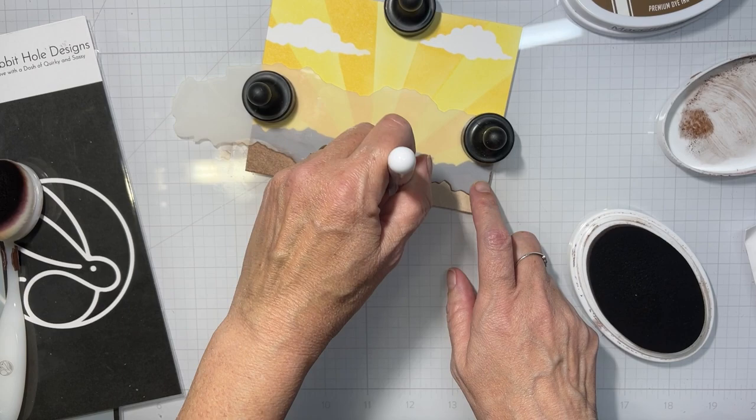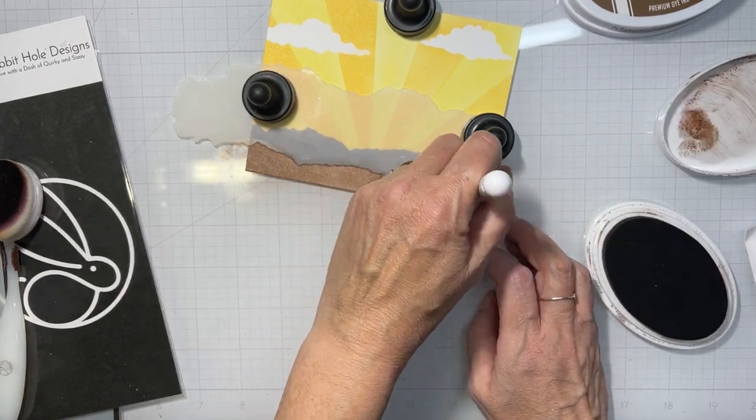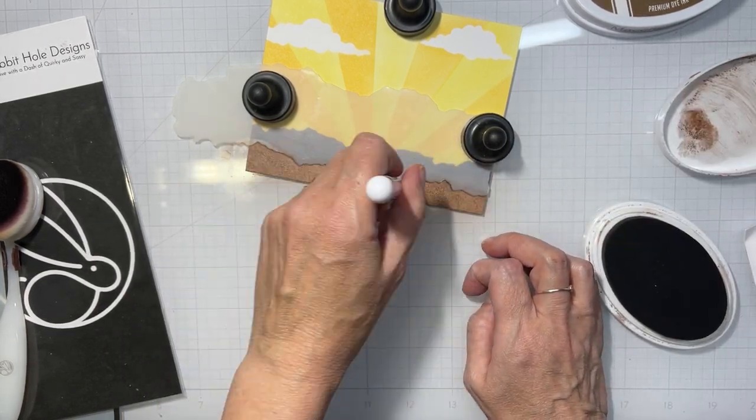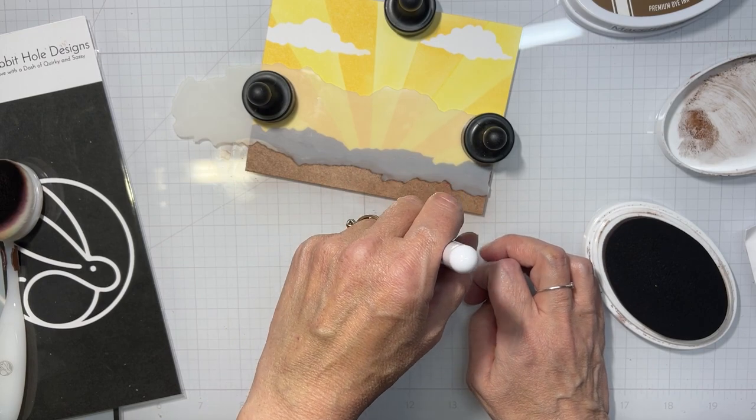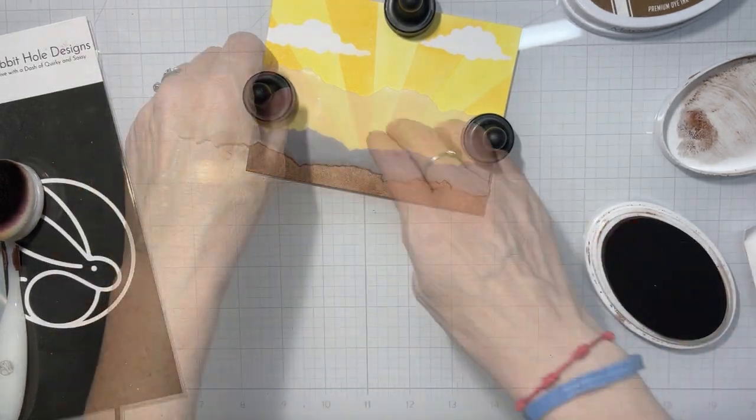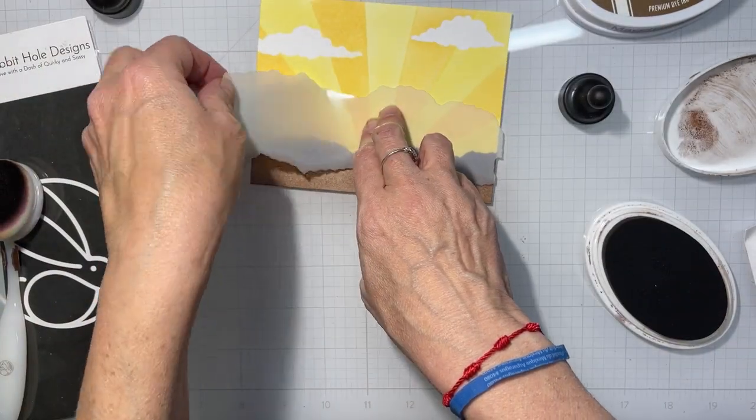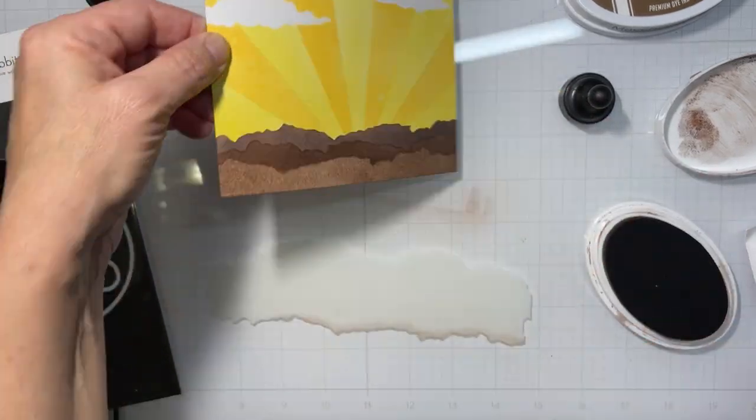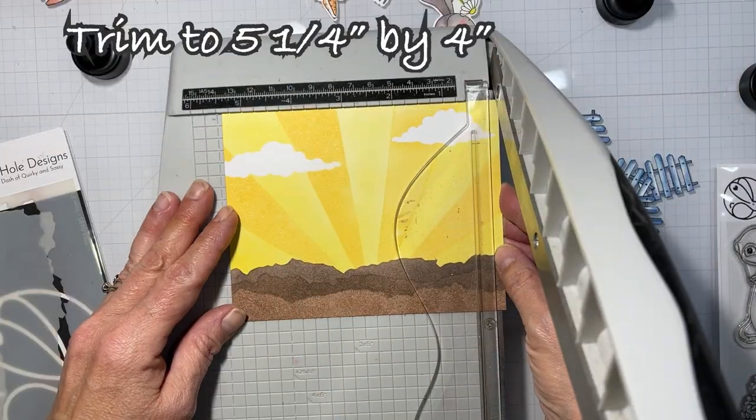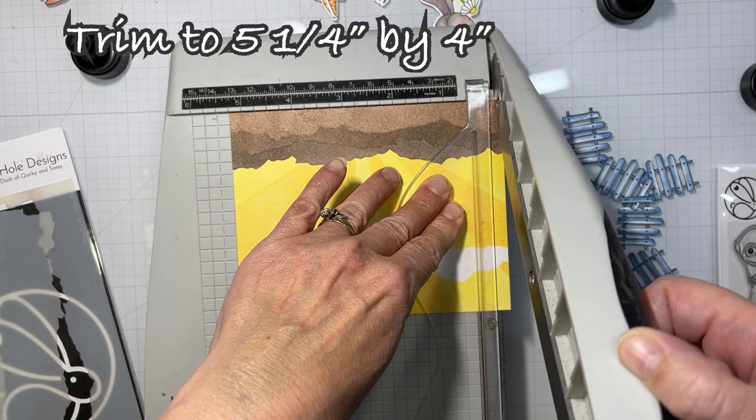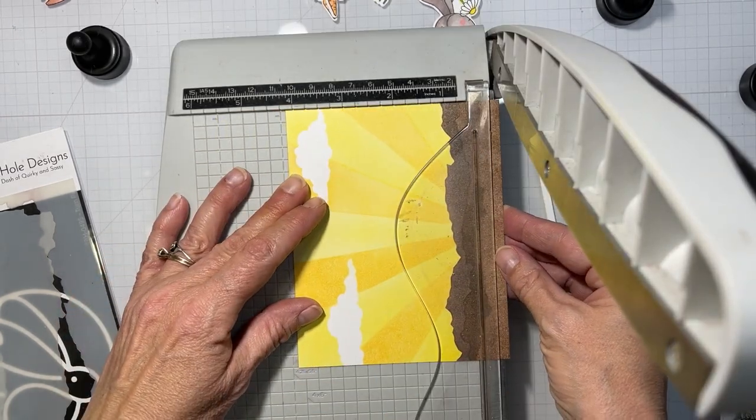And then the base layer was that Cappuccino from Simon Says Stamp. Anyway, moving on. I have to say, staring at it right now, I can't get over how nice and sharp the new packaging looks for Rabbit Hole Designs. I really like it. I love all things black and white and gray.